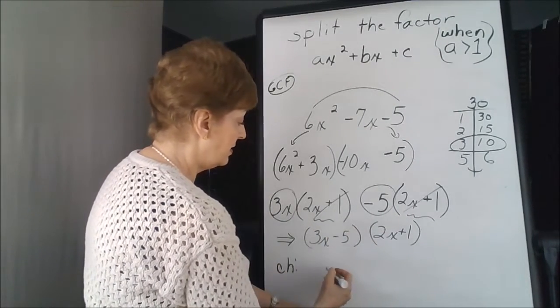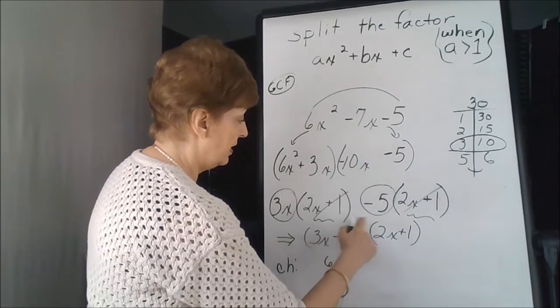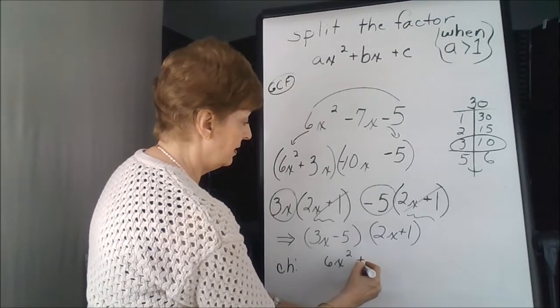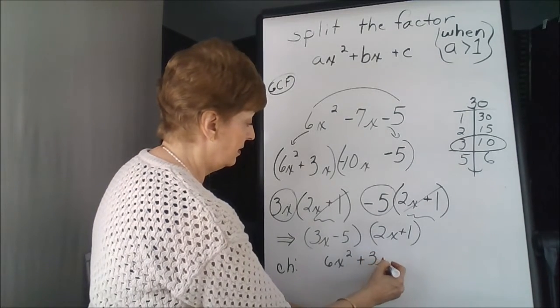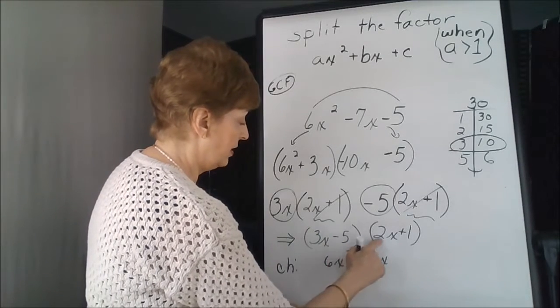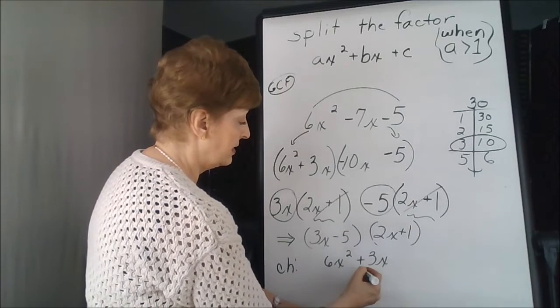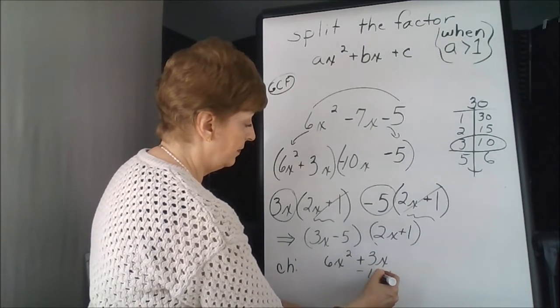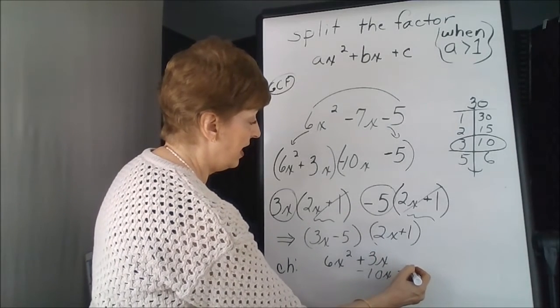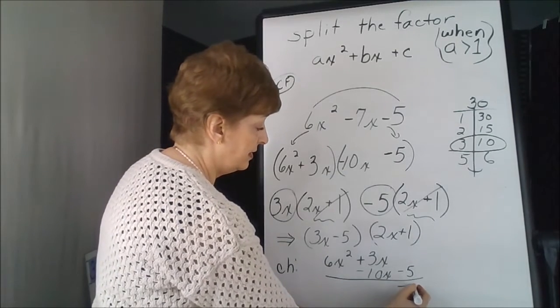3x times 2x is 6x squared. 3x times 1 is plus 3x. Done with the first term, I'm going to go under now. Negative 5 times 2x is a negative 10x, and negative 5 times 1 is a negative 5.